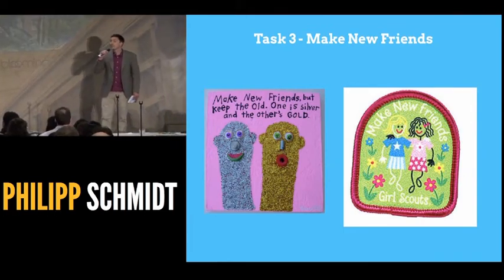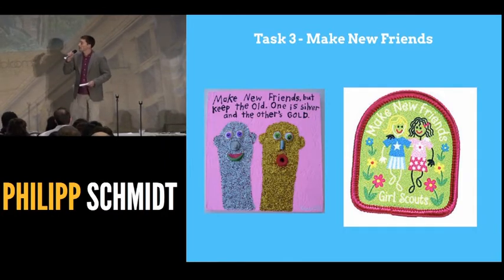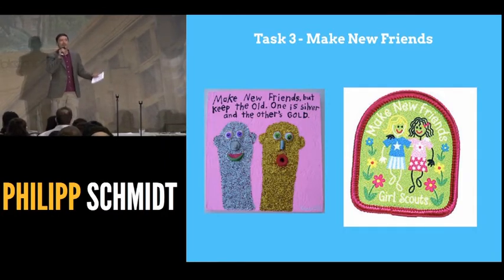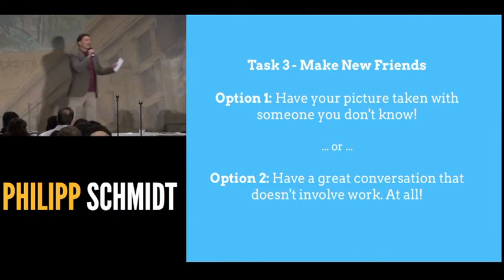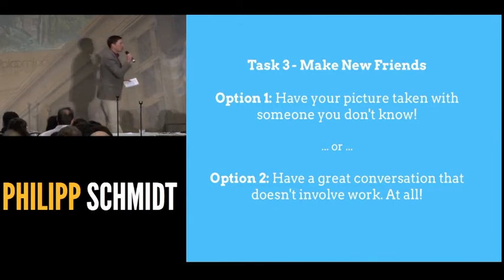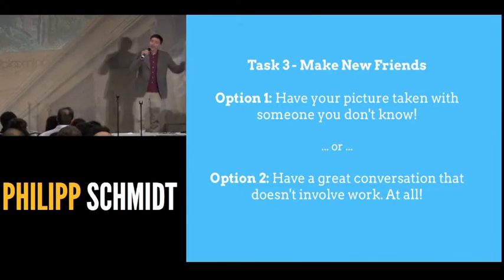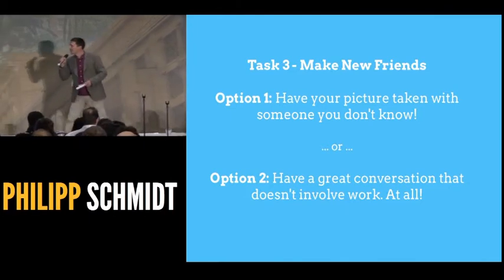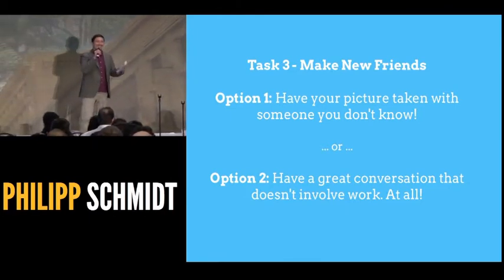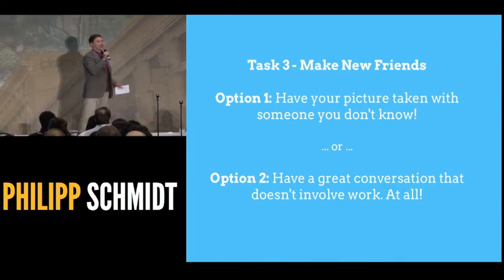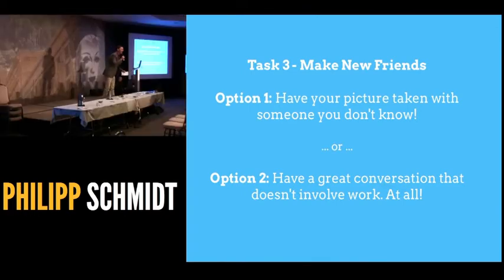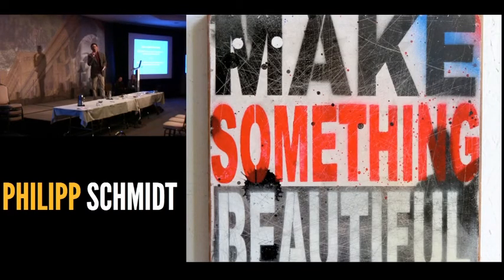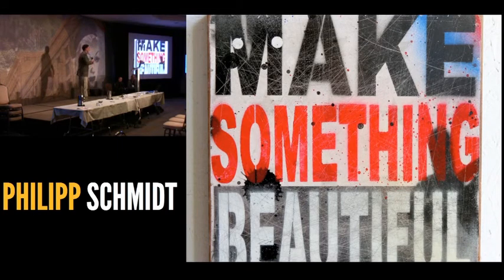One thing we don't do enough of at conferences is make new friends — we tend to talk to people we already know. Two options: option one, walk up to a total stranger, have a photo taken with them, and post it on your blog. Option two, have a great conversation with someone that doesn't involve work at all — you're not allowed to talk about work. Option one? Option two?